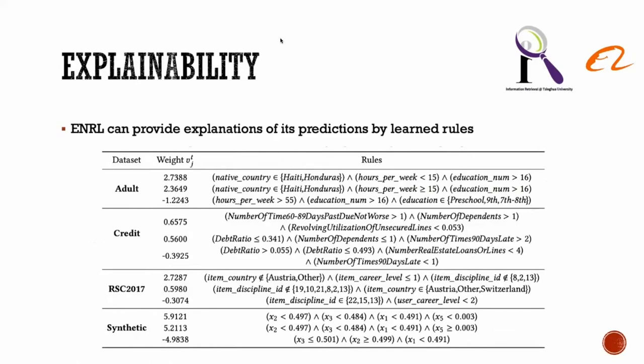First is explainability. For each dataset, we show two supporting rules with positive voting weights and one opposing rule with negative voting weights. For adult dataset, the two supporting rules together describe that immigrants from Haiti and Honduras have high incomes if they are highly educated, while the opposing rule shows that if one's education is lower than high school and works more than 55 hours per week, he or she is more likely to have an income of no more than $50,000. For credit dataset, it is clear that the most reliable rule is checking whether one experienced delinquency before and how the balance is on his credit lines. The opposing rule describes somebody that has never experienced delinquency and is in a low debt ratio.